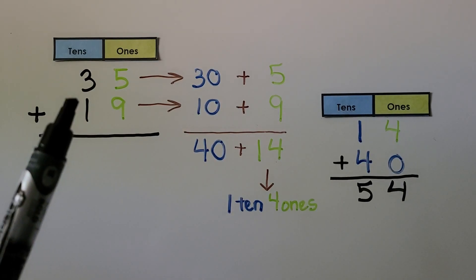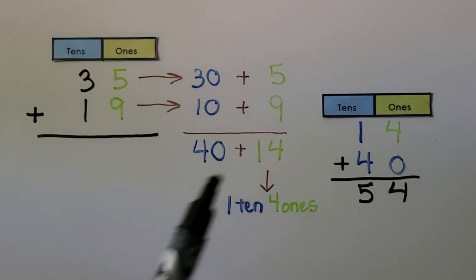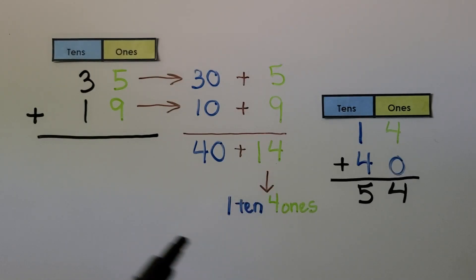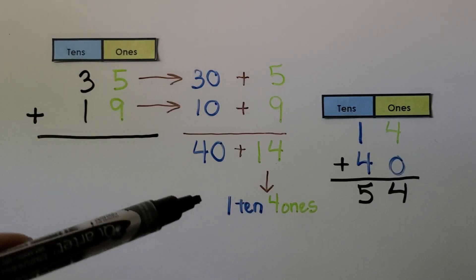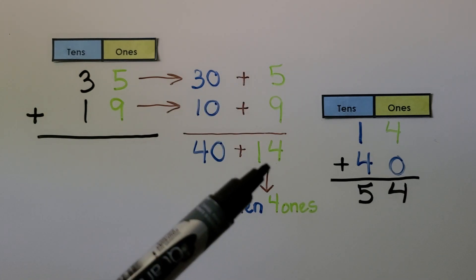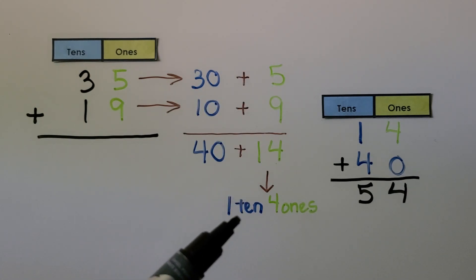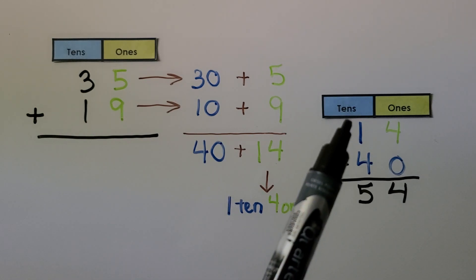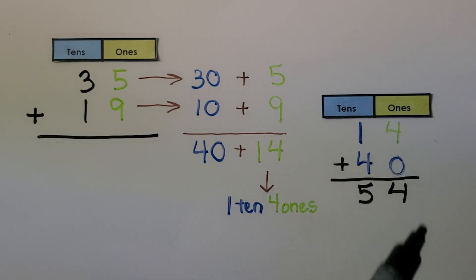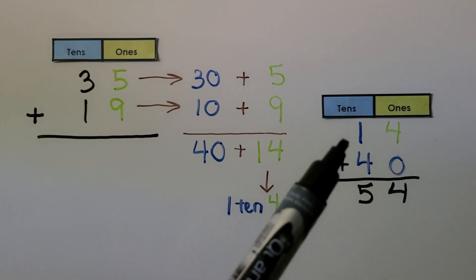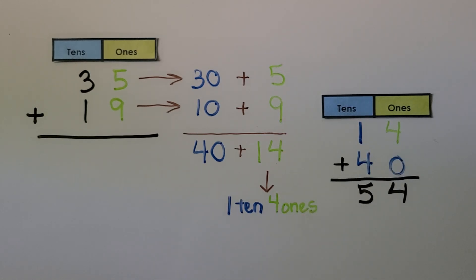We split 35 into 30 plus 5 and 19 into 10 plus 9. When we added the tens and then the ones, we had 40 plus 14. The 14 is 1 ten and 4 ones, so we put the 1 ten into the tens place. 4 plus 0 is 4, and 1 plus 4 is 5. It's equal to 54.